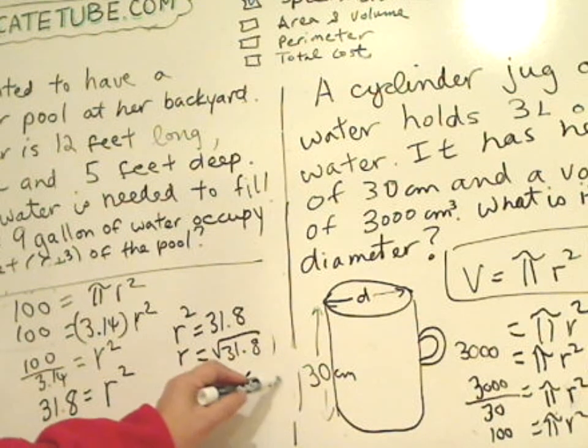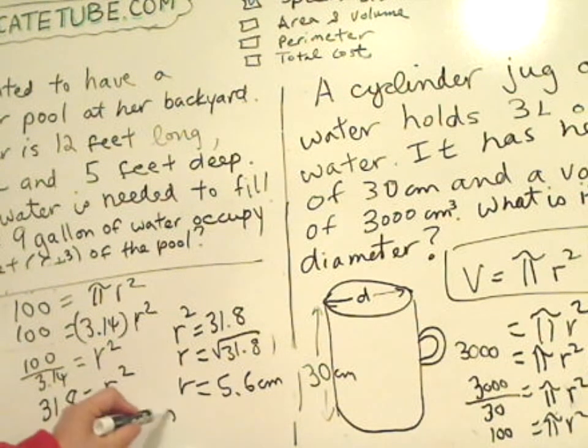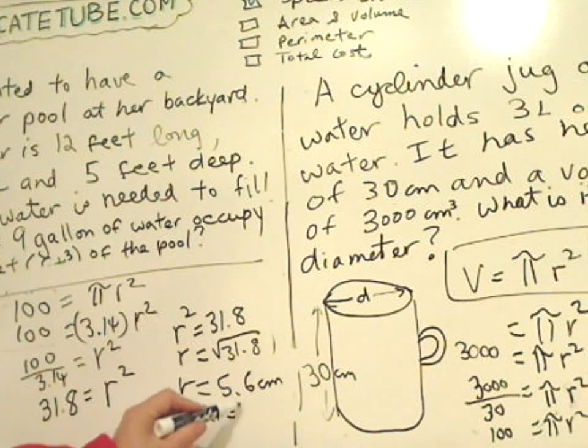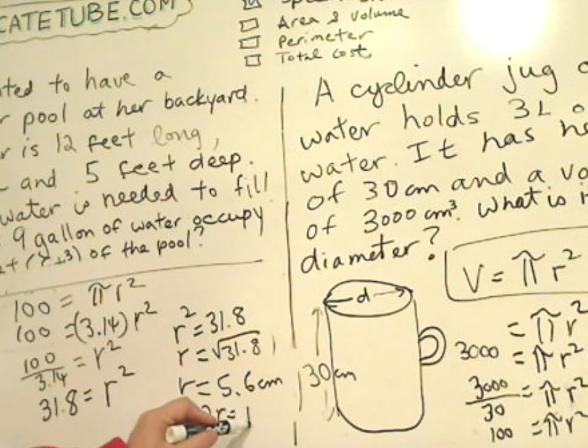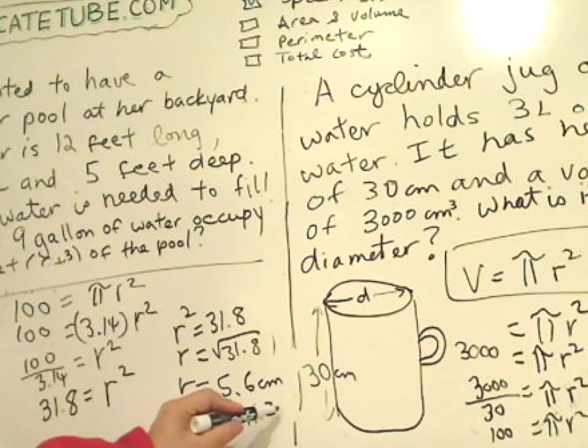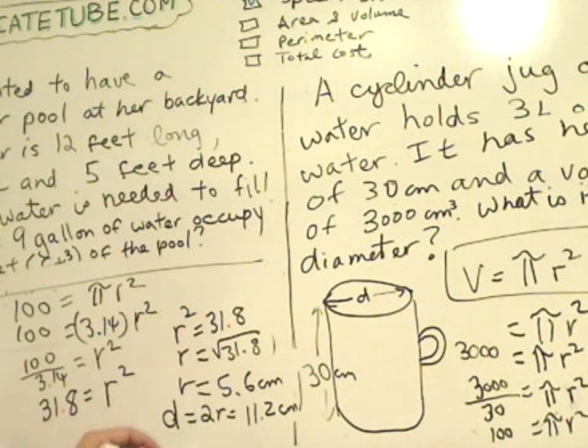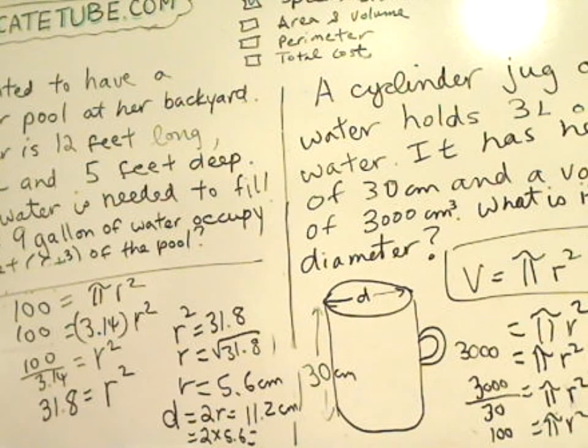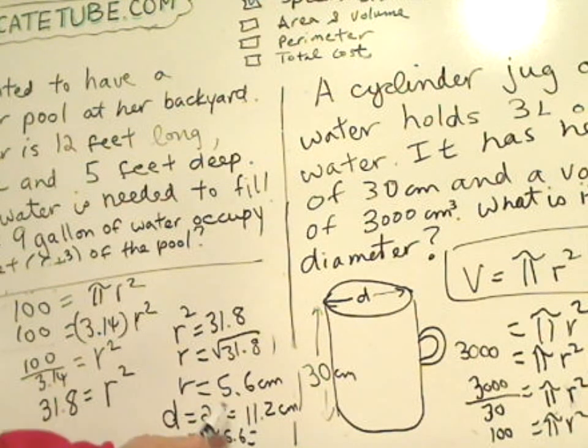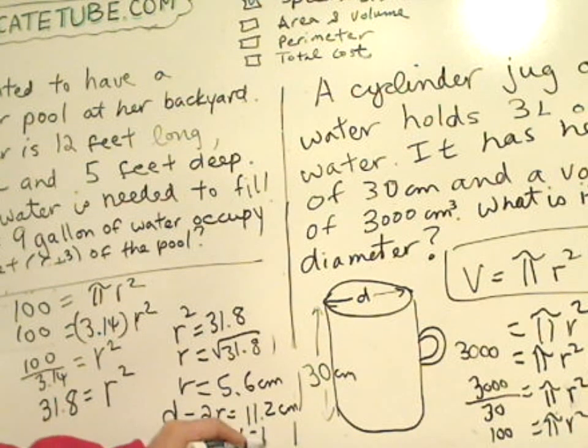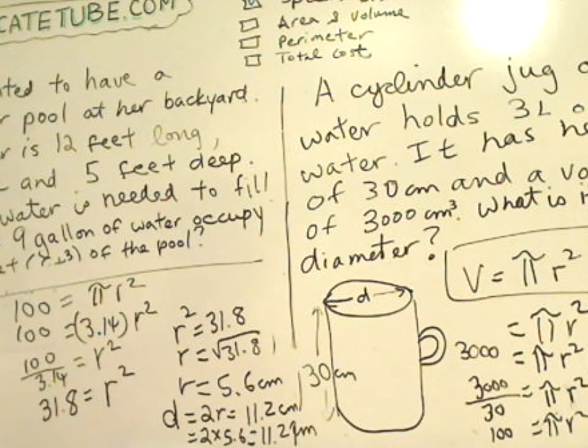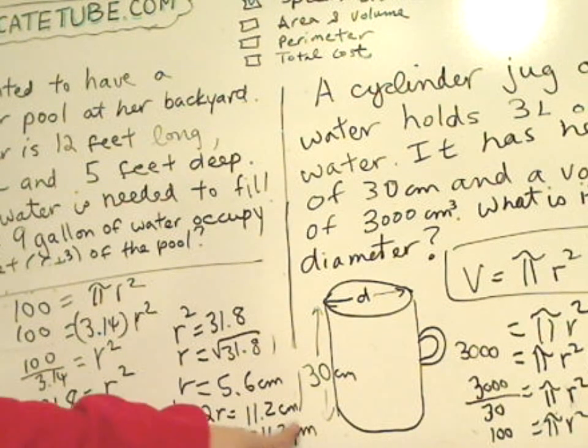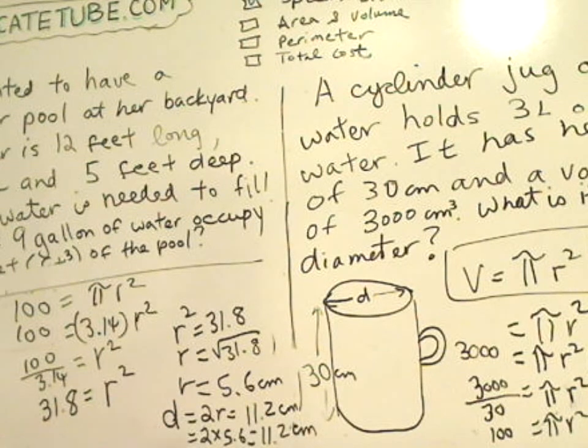And remember, because we're talking about d, it's 2r, twice as much, so now we are talking about 11.2 centimeter, because it's 5.6 times 2. Like 2 times 5.6. And that gives you 11.2, there we go, and so that's the answer, the answer is 11.2 centimeter.